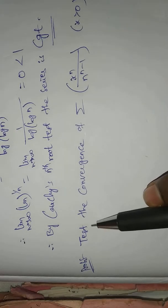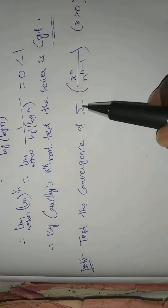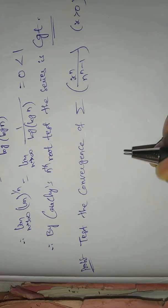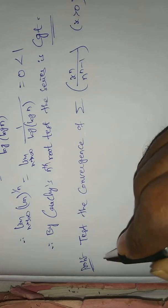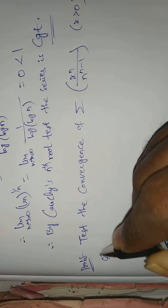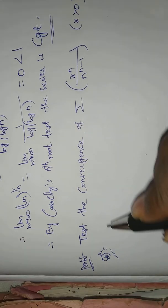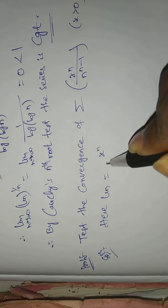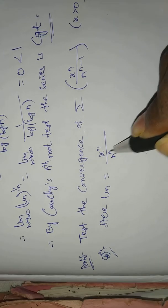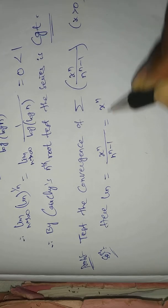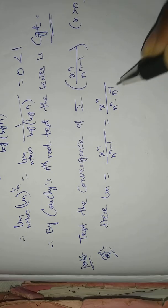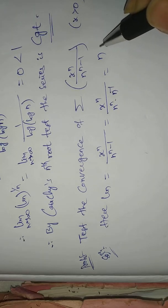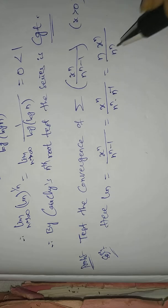Next problem: test the convergence of summation x^n by n^(n−1), where x > 0. Here, u_n equals x^n by n^(n−1), which equals x^n by n^n times n inverse, that is, u_n equals n times x^n by n^n.